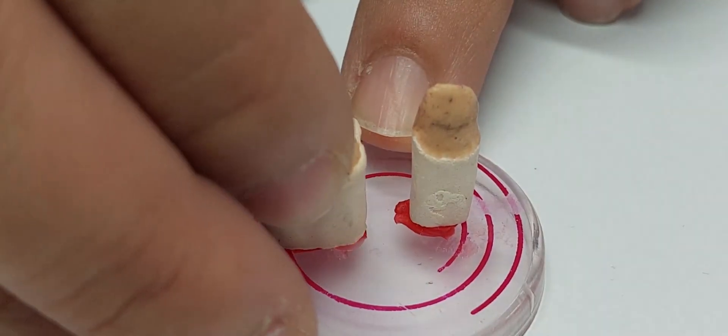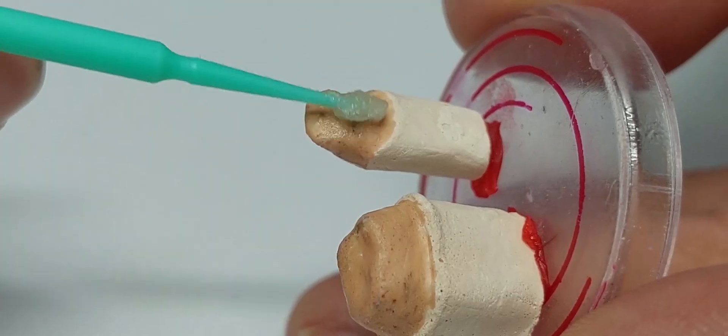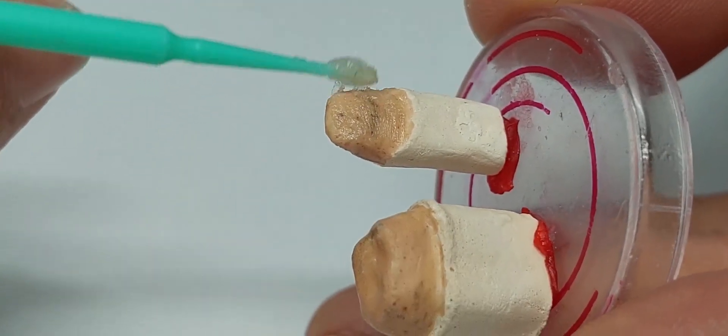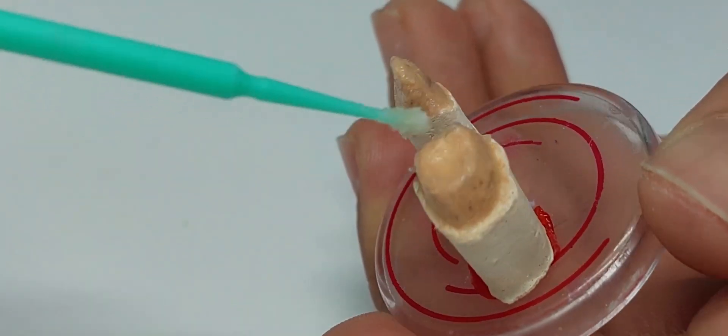Once we have these parallelized and blocked out, apply petrolatum or vaseline. We first apply using a small brush and then spread it out with our finger.